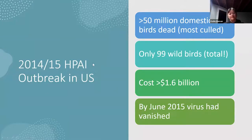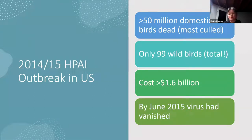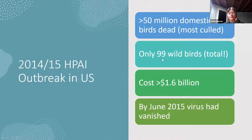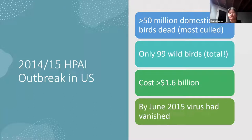The 2014–15 high path AI outbreak affected over 50 million domestic birds, most of which were culled — that's been the primary mechanism for controlling high path AI in the United States. During that outbreak, only 99 wild birds total were detected with high path AI. By June of 2015, six to eight months later, the virus had completely vanished from the United States — it was no longer detected across North America.